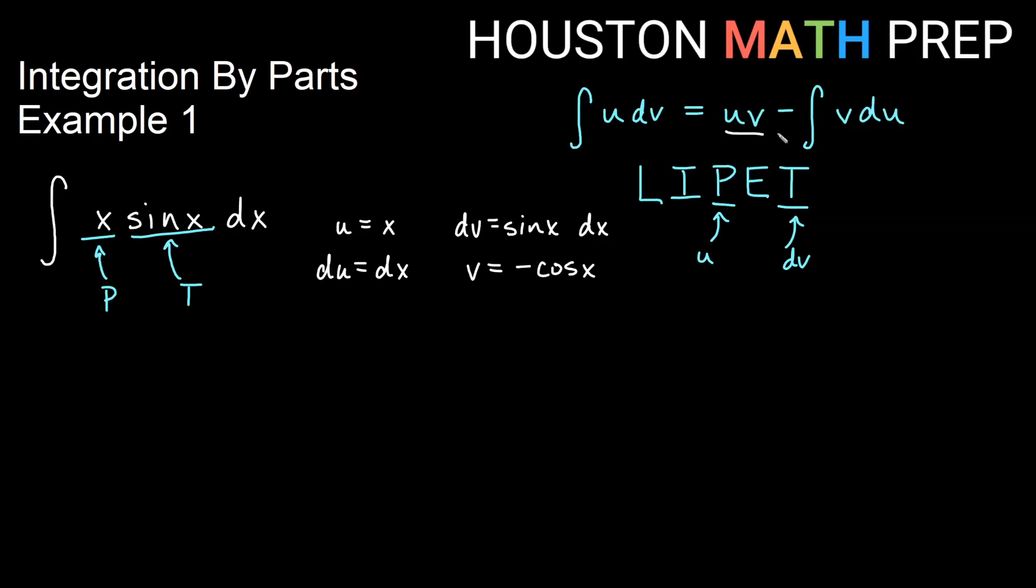And now we use our formula uv minus integral v du. So we'll go ahead and say that this integral is equal to u times v, which would be negative x times cos x minus the integral of v du.